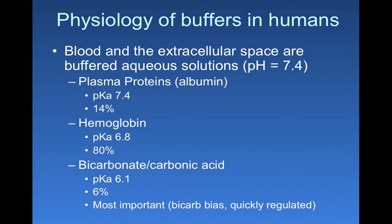The molecule with the biggest buffering capacity in your blood is hemoglobin, which has a pKa of 6.8. That's not too far from 7.4, but it means there's more acidic hemoglobin than basic hemoglobin in that Henderson-Hasselbalch ratio. Hemoglobin has an 80% buffering capacity. The last buffering system — bicarbonate/carbonic acid — only has a 6% buffering capacity. However, it's arguably the most important buffering system in your blood because it's most quickly changed and regulated.